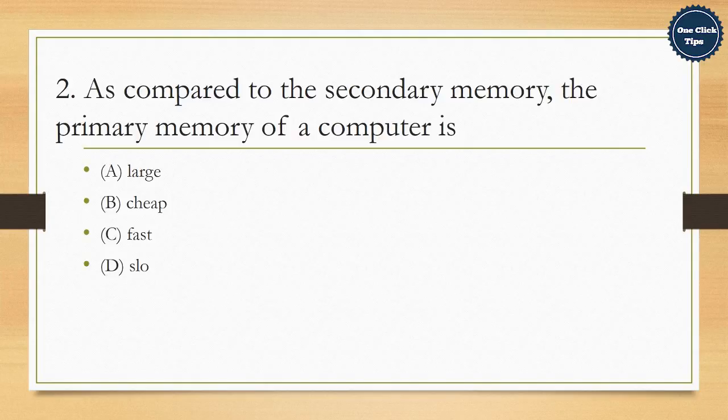2. As compared to the secondary memory, the primary memory of a computer is A. Large, B. Cheap, C. Fast, D. Slow. The correct answer is C. Fast.